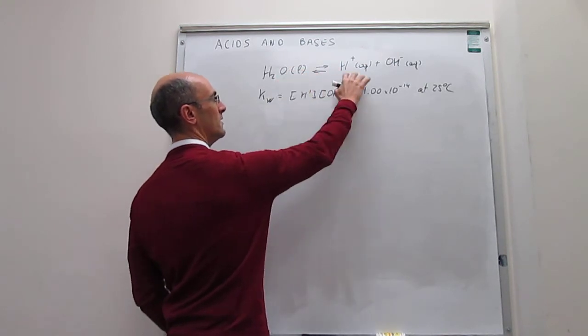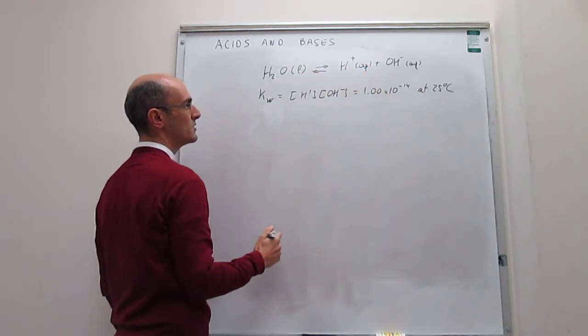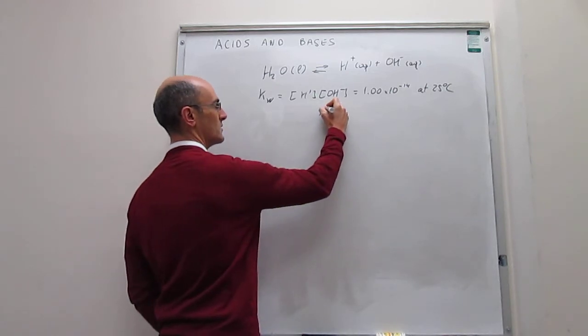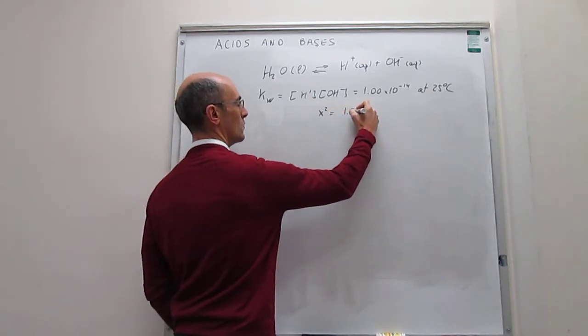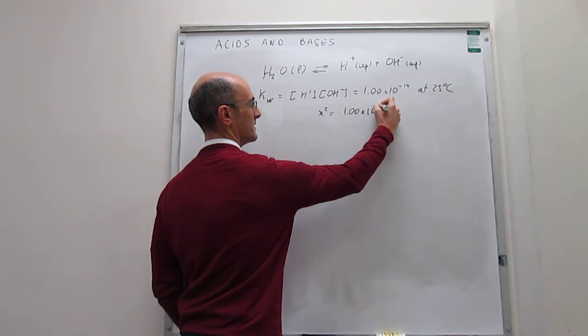If you have pure water, you will have exactly the same amount of each. What that means is that you have an equation that is x squared equal to 1.00 times 10 to the minus 14 at equilibrium.